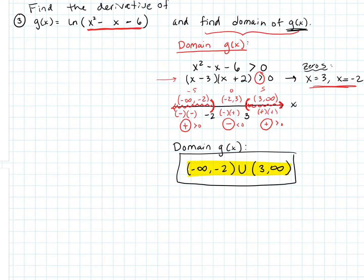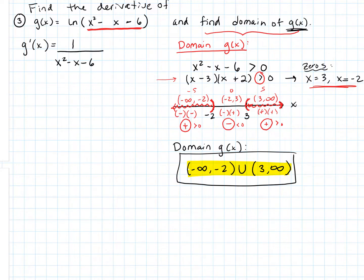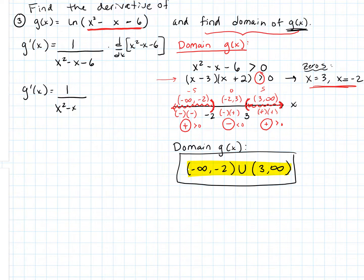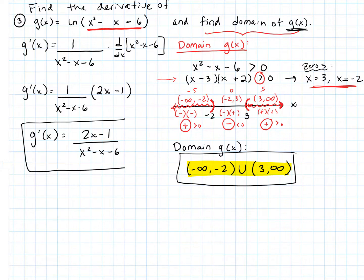That was actually just a precalculus review. Now let's take the derivative. Applying the chain rule: the derivative of the natural log is 1 over the argument, so we get 1 over x squared minus x minus 6, times the derivative of the inside, which is 2x minus 1. Therefore g prime of x equals 2x minus 1 over x squared minus x minus 6.